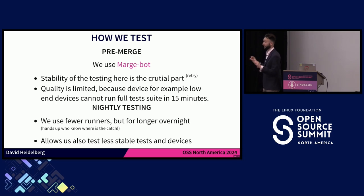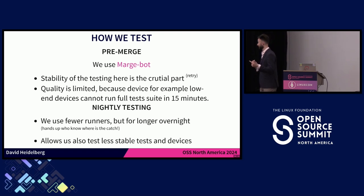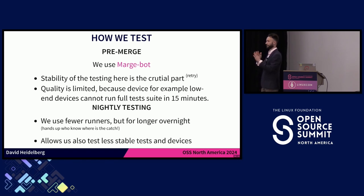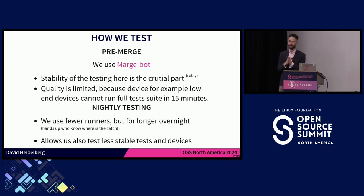We can't test everything on every hardware, but we try to compensate with nightly testing — testing everything, because reporting failure retroactively is not pleasant but it's better than nothing. For nightly testing we reserve one to three runners per device depending on availability and do the testing overnight. I have a question outlined here: anyone see a problem with testing overnight?